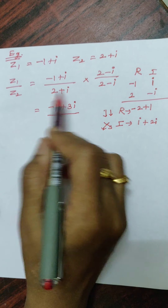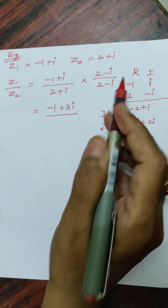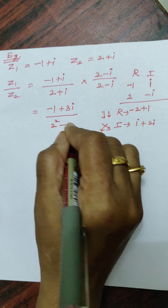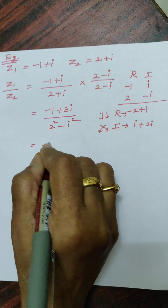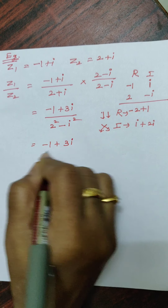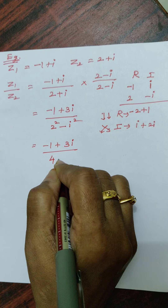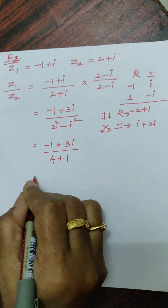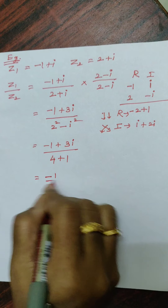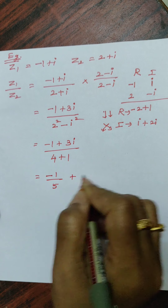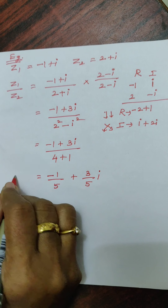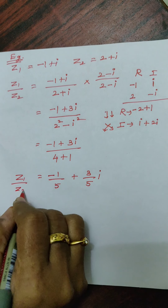So the result is (minus 1 plus 3i) divided by 5, which equals minus 1 by 5 plus (3 by 5)i. This is the rectangular form or standard form of z1 by z2.